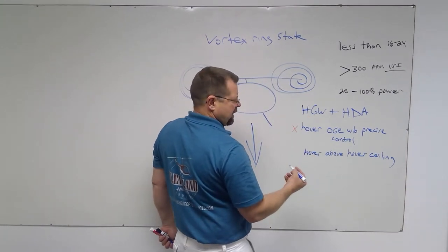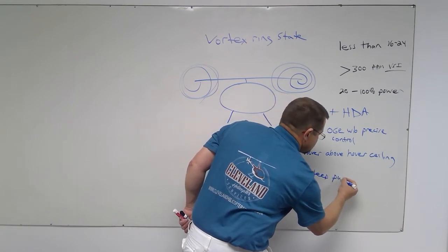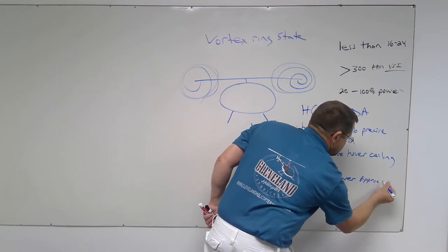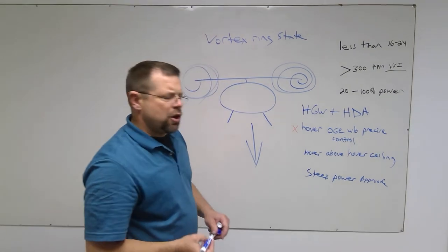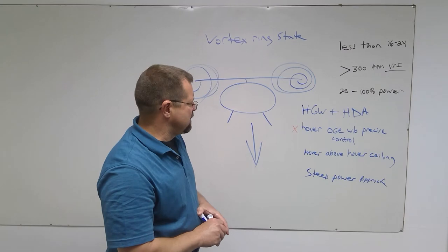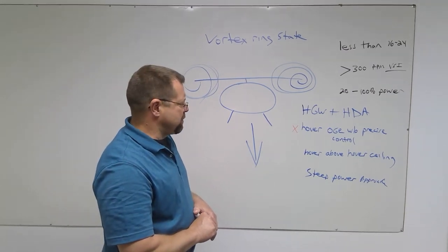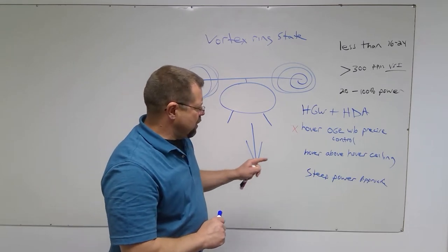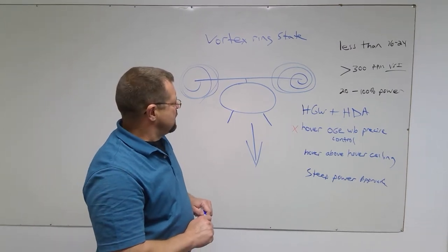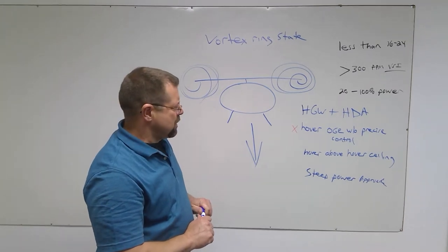Attempting to hover above the hover ceiling could cause settling with power. Another thing that could cause settling with power would be steep powered approach. On a steep powered approach, possibly the pilot could misinterpret the wind. The wind could change during the approach due to mechanical turbulence. The pilot needs to be on guard during steep powered approaches watching that he does not get into settlement of power and be prepared to quickly recover should it happen.